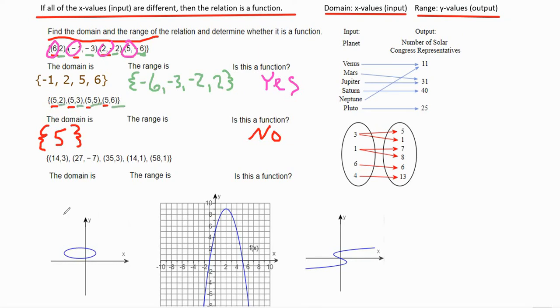And for the bottom one here, we have these points here. The domain will be the x values. So it would be 14, 27, 35, 14, and 58. Notice that at the end, it's brackets, not parentheses. Also note that the 14 repeats itself for the x values. So this is not a function.